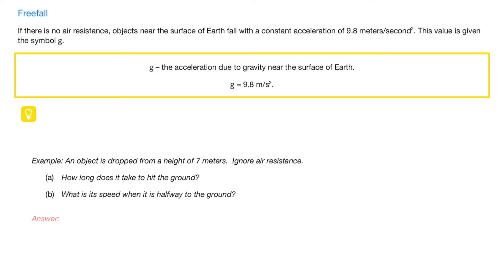Now that we've learned about the kinematic equations, we will apply them to a very important example: freefall. Freefall is simply when we drop an object and assume that there is no air resistance. If there is no air resistance, then objects near the surface of the earth fall at a constant acceleration, given by 9.8 meters per second squared.